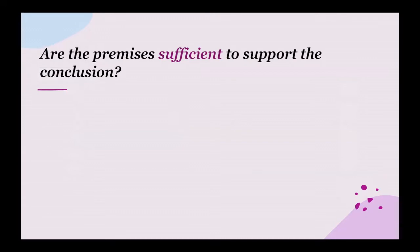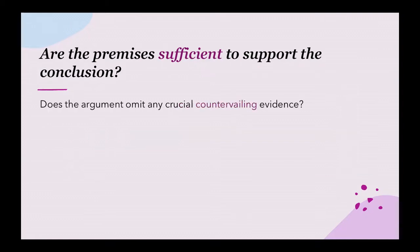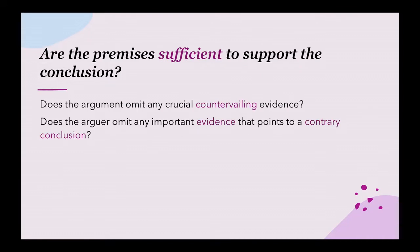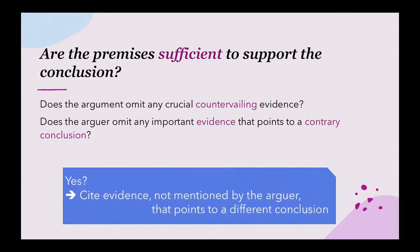In evaluating with the second method, we have to show that the conclusion does not follow from the premises, or we can show that the premises are not sufficient to support the conclusion. To answer whether premises are sufficient, we often ask more specific questions, like: does the argument omit any crucial countervailing evidence? Or does the argument omit any important evidence that points to a contrary conclusion? If the answer is yes, we need to cite that evidence — we call it countervailing evidence.